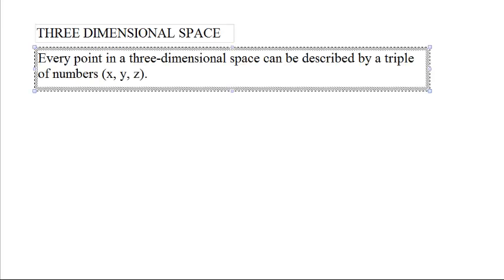We've talked about one and two dimensional spaces, let's talk about three dimensional space. Every point in a three dimensional space can be described by a triple of numbers: x, y, and z.